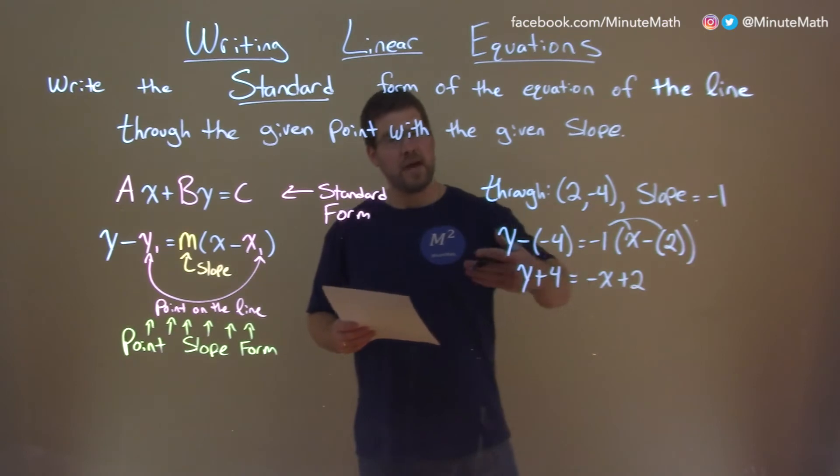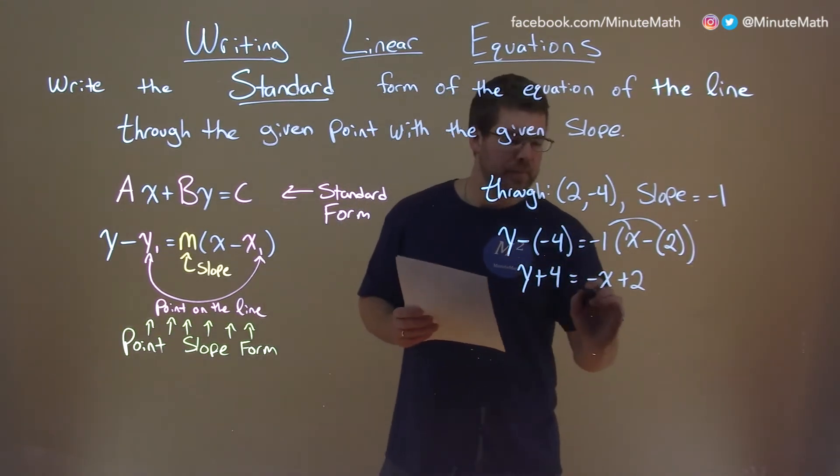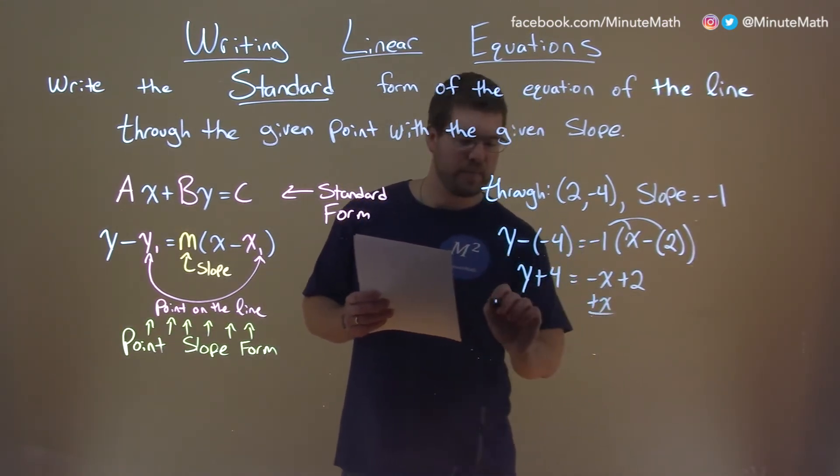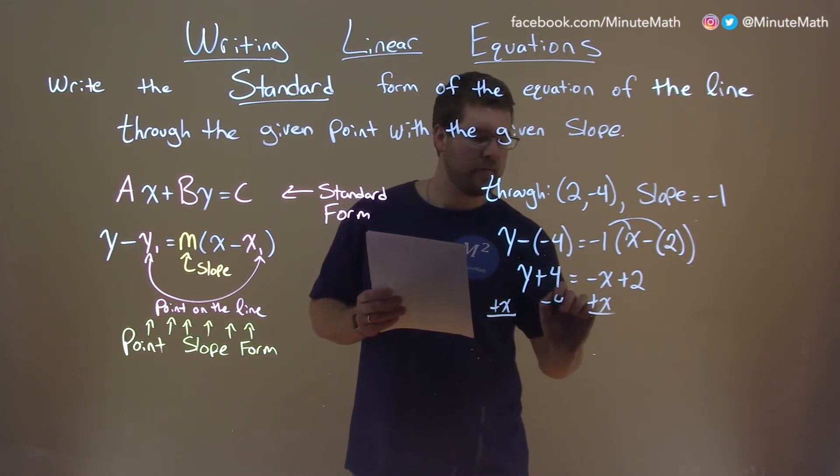x is to the left, numbers to the right. So, add an x to both sides, subtract a 4 to both sides.